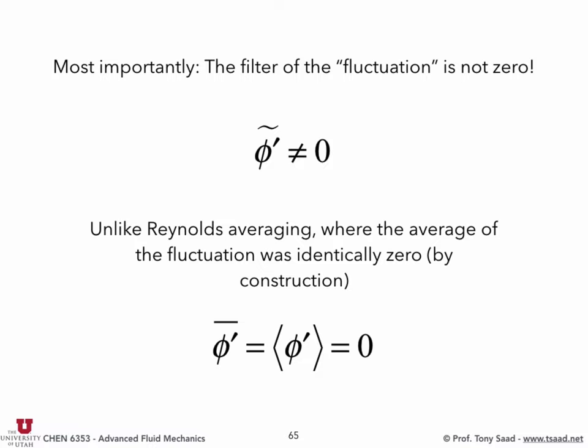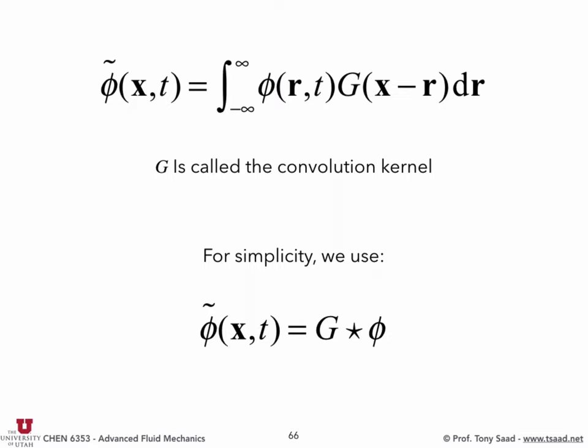Contrast that to Reynolds averaging, where the average of the fluctuation is zero — because you draw your average in a way that there are as many fluctuations above the average as there are below, so they add up to zero.